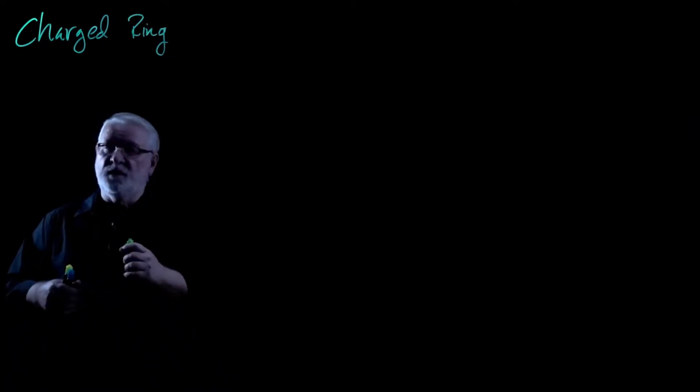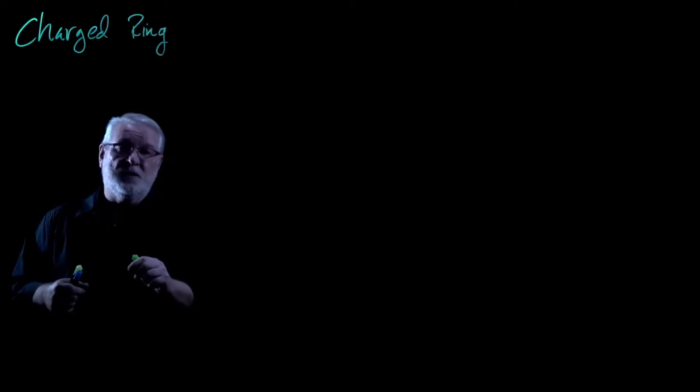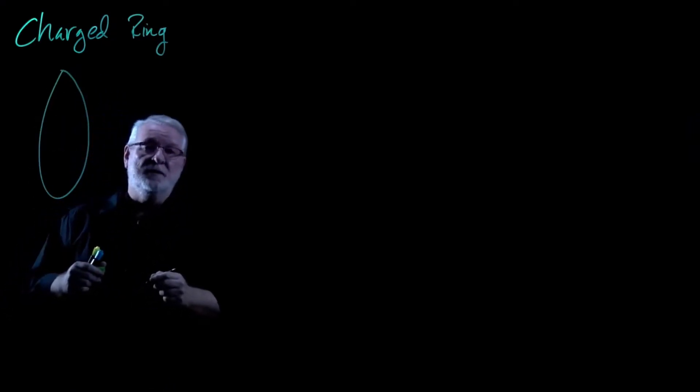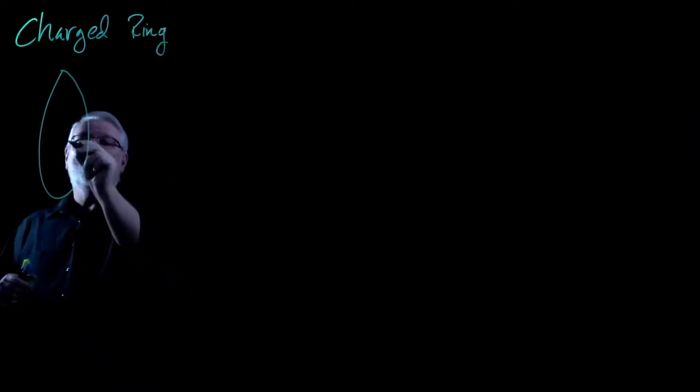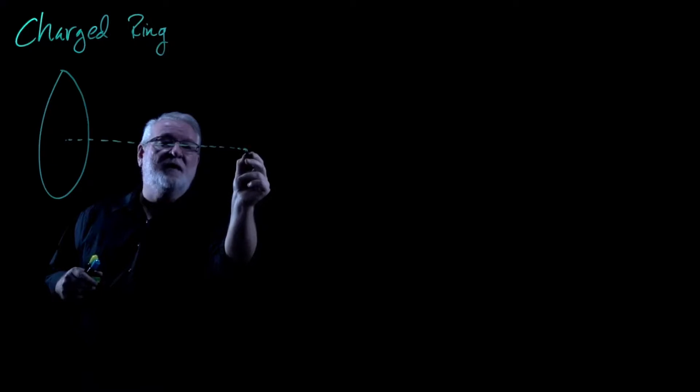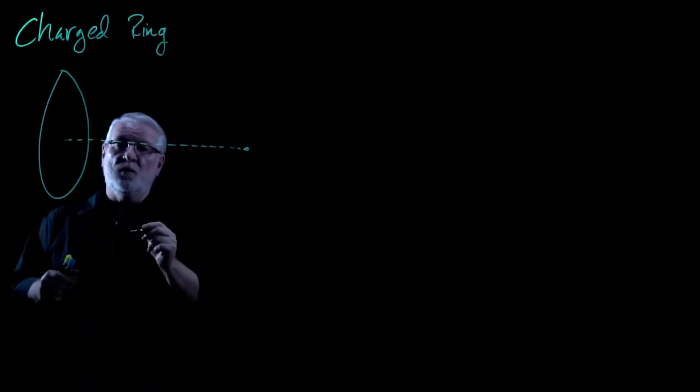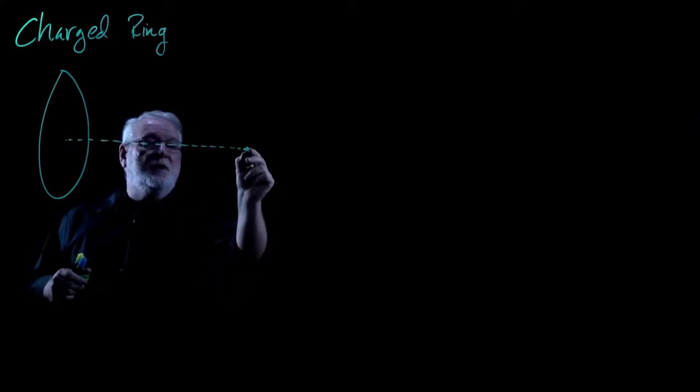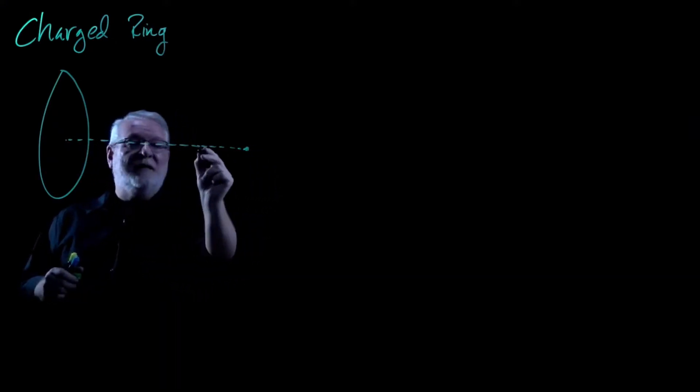Unlike the previous video where we found it at the center of a charged arc, we're not necessarily just interested in the electric field at the center of a ring. We'll see why in just a second, but that would actually be a really dull analysis. What we want to do instead is look at the electric field at some point along the axis of the ring. So this will be where we're locating the analysis for our electric field. We want to know the electric field at this point along the axis of a ring.